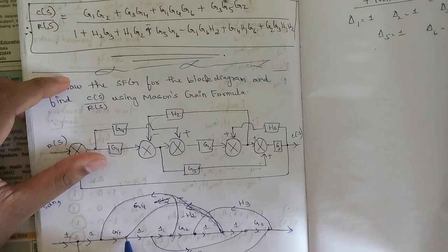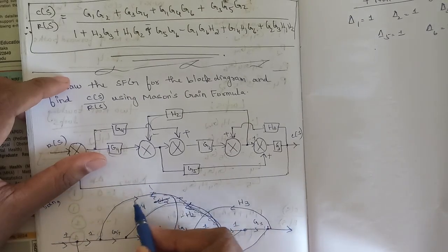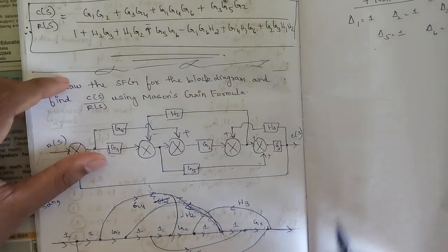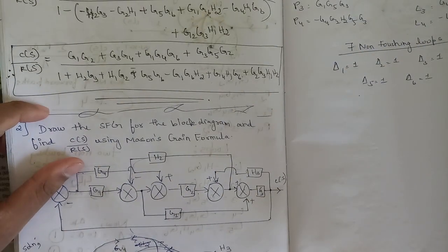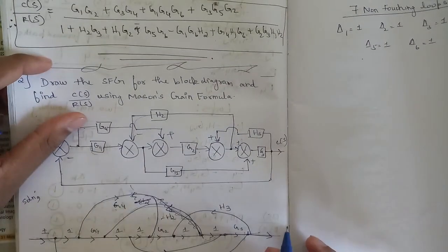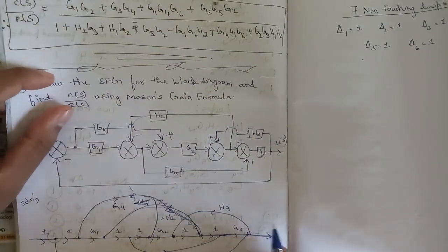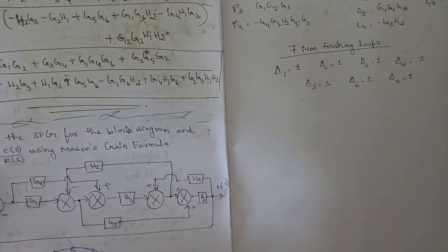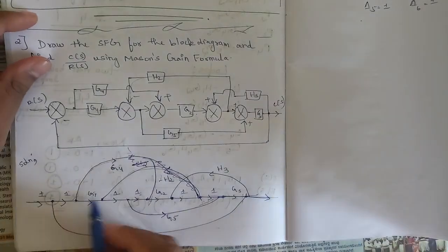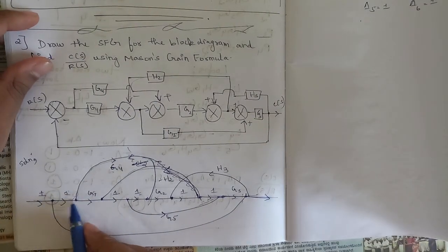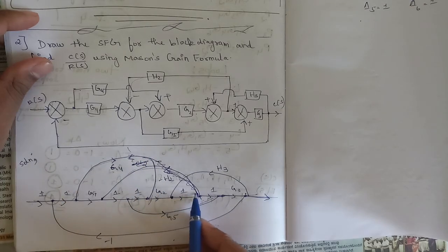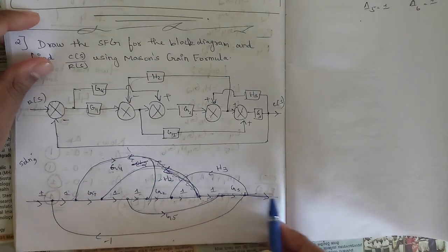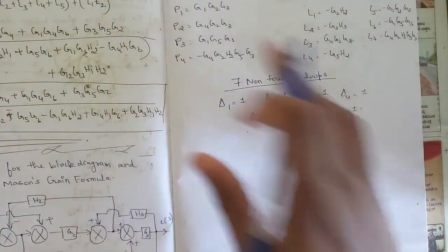G4 is the branch from this node. So P2 is G4·G2·G3. The third path P3 is G1·G5·G3. The fourth path P4 is G4·G2·H2·G5·G3 with a minus sign — that is, starting from 1, 1, G4, G2, then going through H2, then coming back through G5 and G3. So these are the four forward paths.